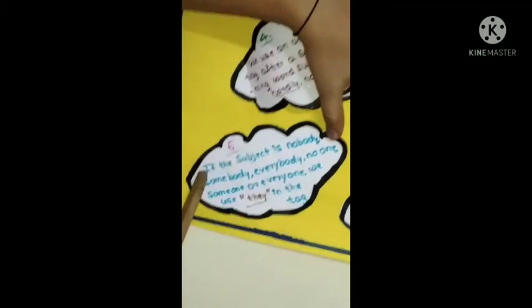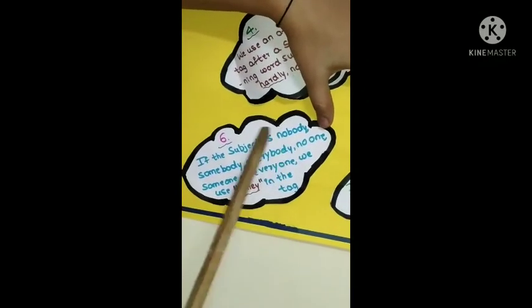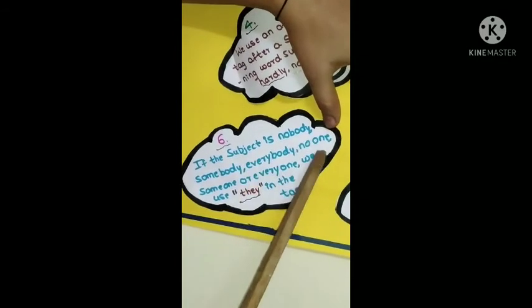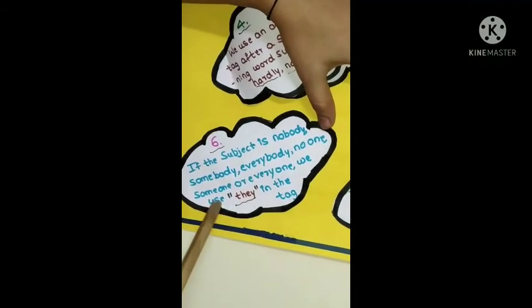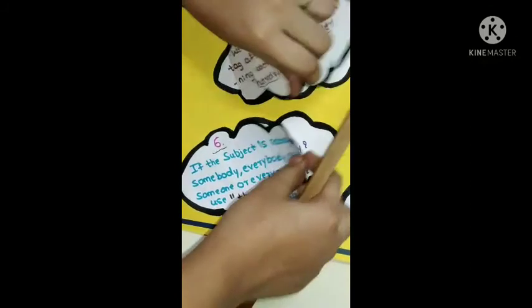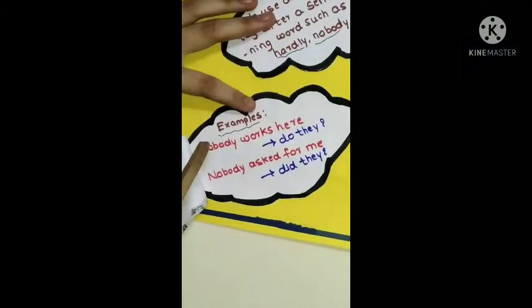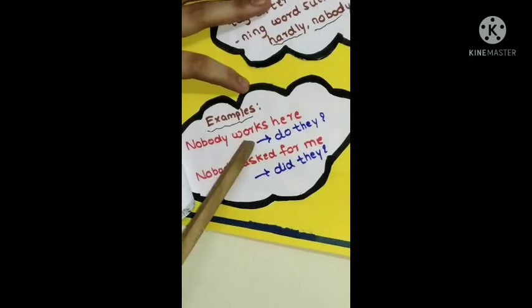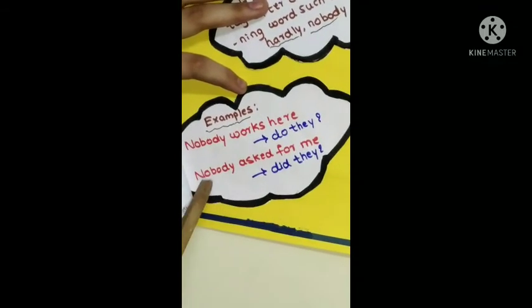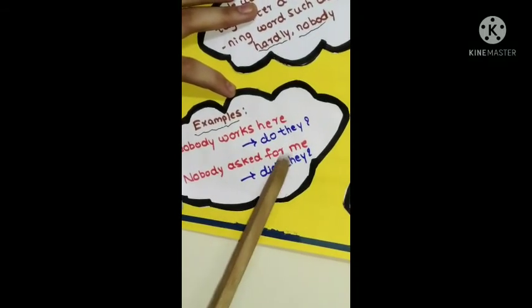Sixth type is if the subject is nobody, somebody, everybody, no one, someone or everyone, we use they in the tag. Now, make sentences by this. Examples: Nobody works here. Do they? Nobody asked for me. Did they?